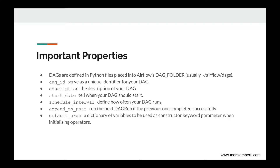The start date tells when your DAG should start. If you set it to today at 10 pm, don't forget that your DAG will be triggered after the start date plus the schedule interval. The schedule interval defines how often your DAG runs. Depends on past runs the next DAG run only if the previous one completed successfully. Finally, default_args is a dictionary of variables to be used as constructor keyword parameters when initializing operators, making it easy to apply a common parameter to many operators without having to type it many times.